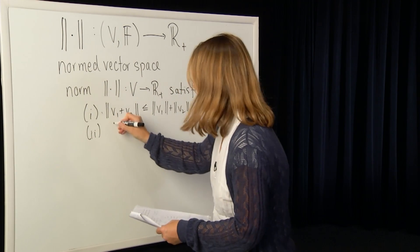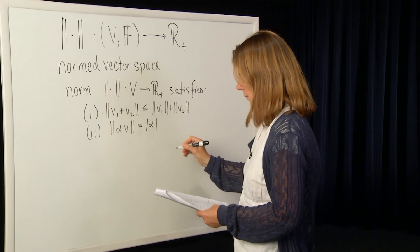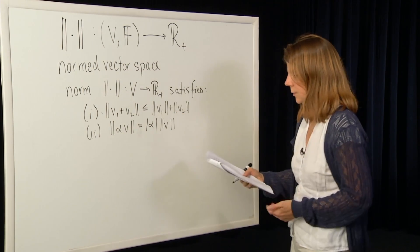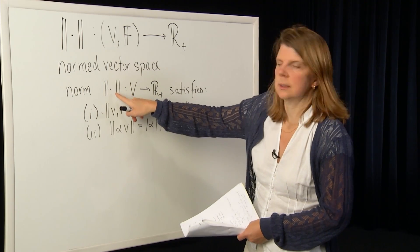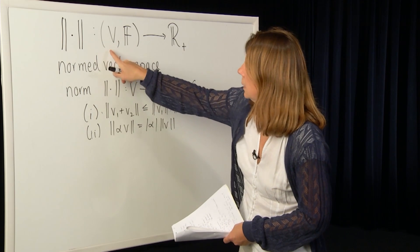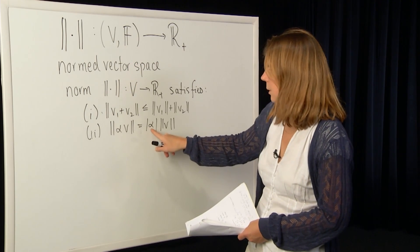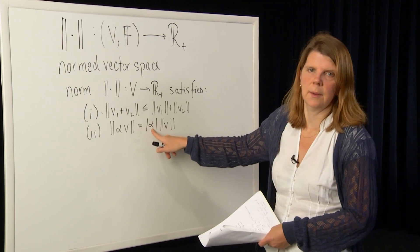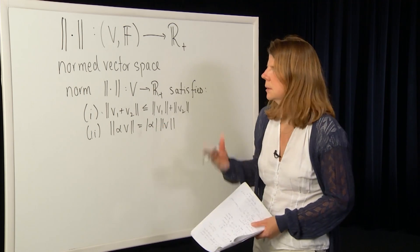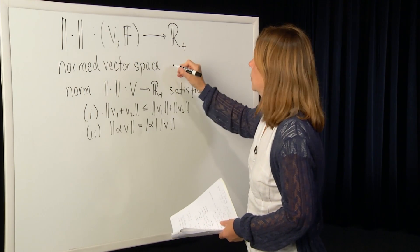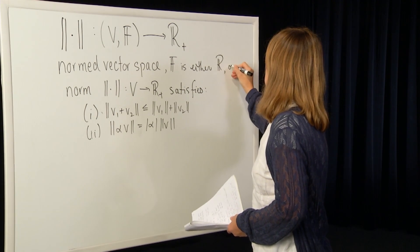The second property is that if you look at the norm of a scalar alpha times the vector V in the vector space, then that's equal to the absolute value of the scalar times the norm of the vector V. The normed vector space requires that the associated field has to be either the real numbers or the complex numbers. So this terminology, the absolute value, has meaning — it's either the absolute value of a real number or the magnitude of a complex number.